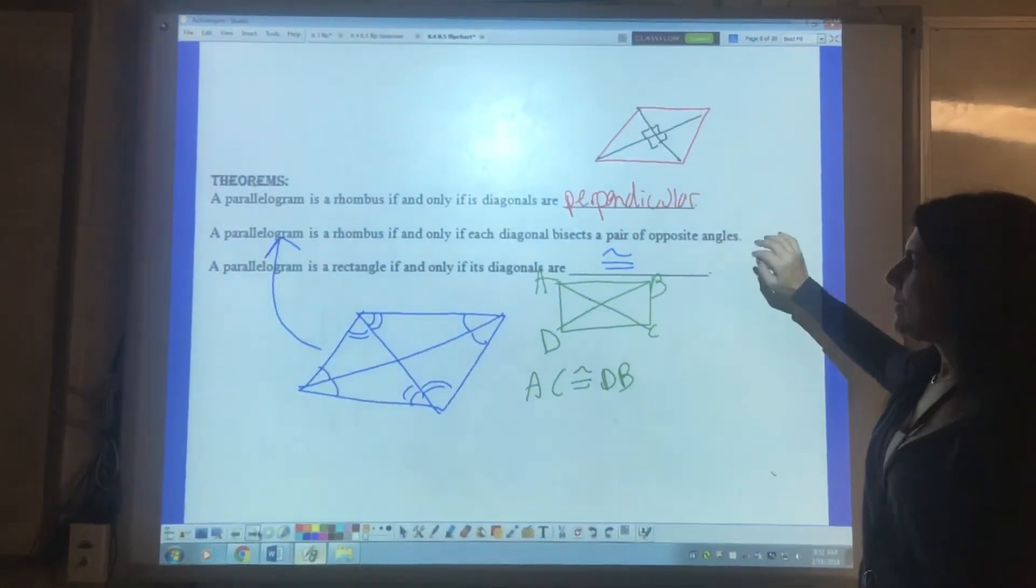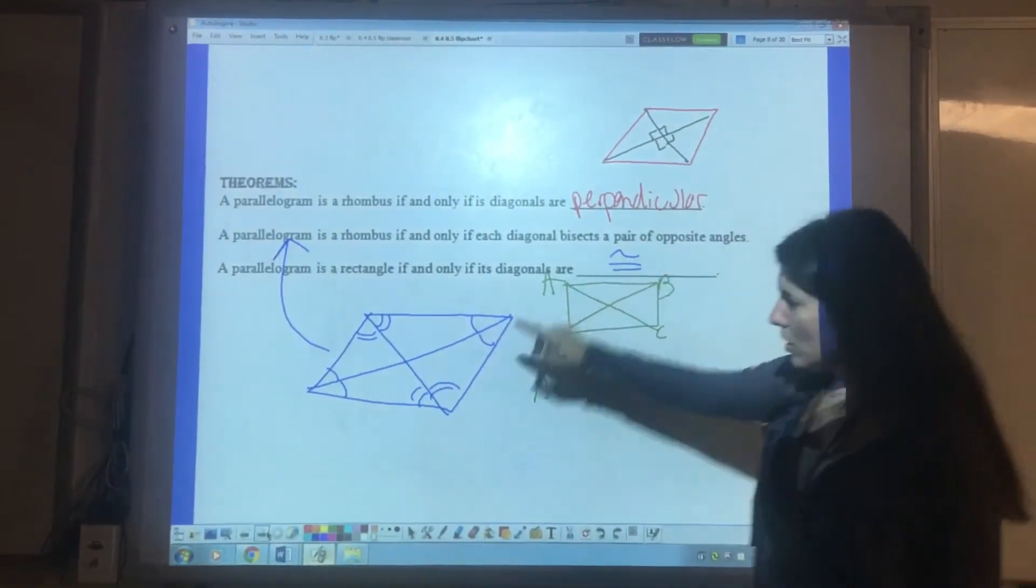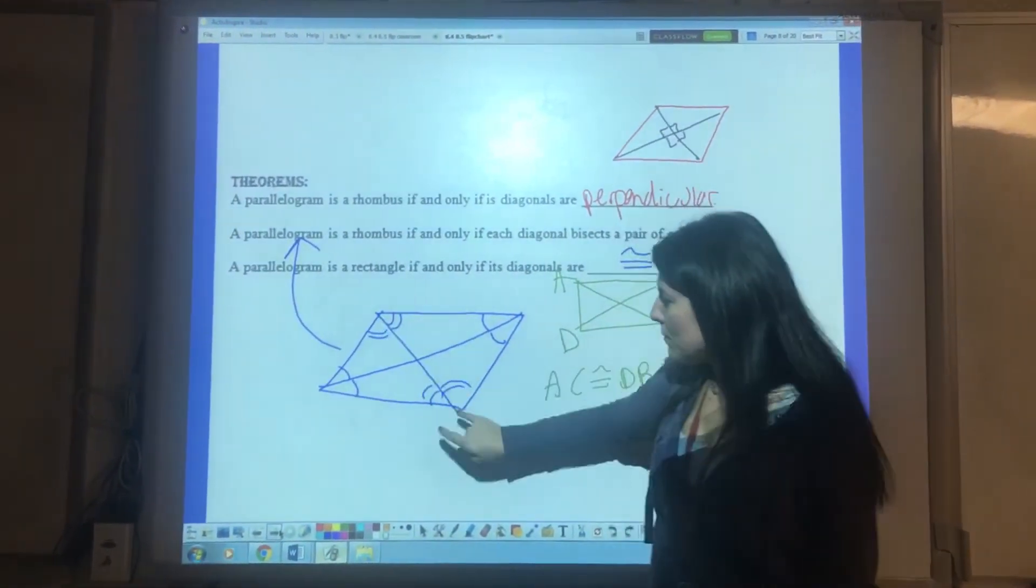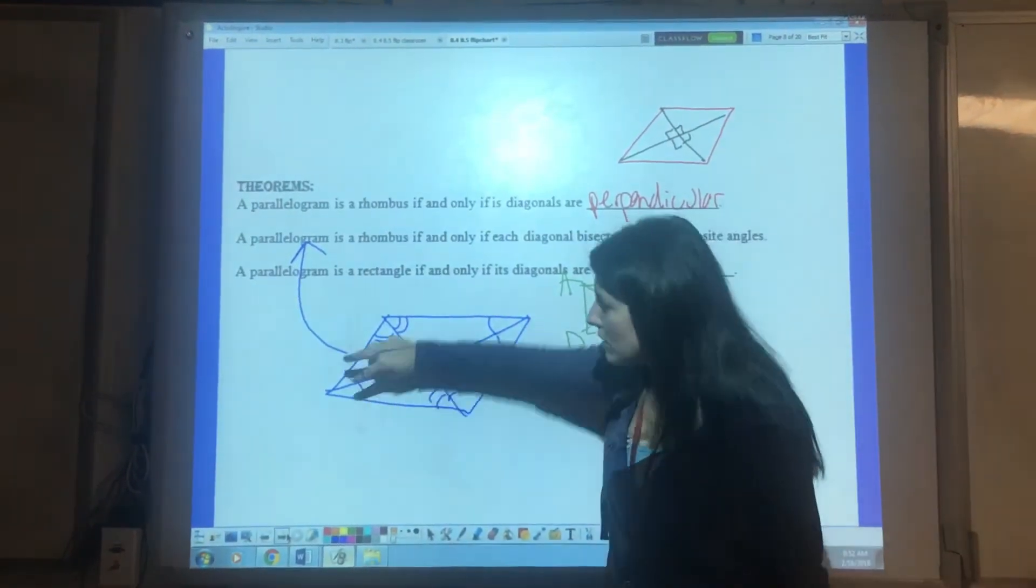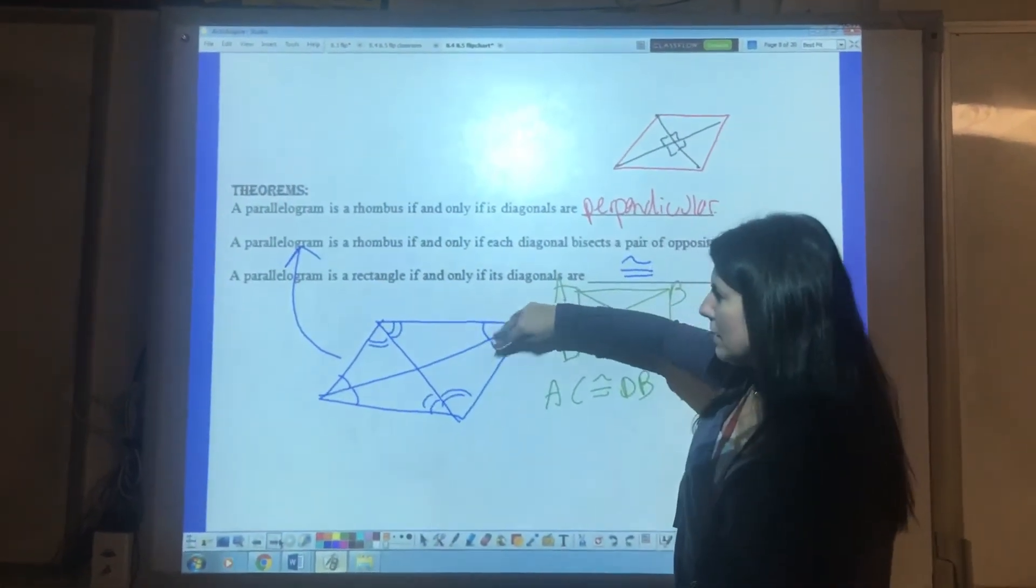It's a rhombus if the diagonals bisect each pair of opposite angles. So this is a diagonal and bisects this angle into two equal angles. Same thing with this one. So this creates two equal angles here and here.